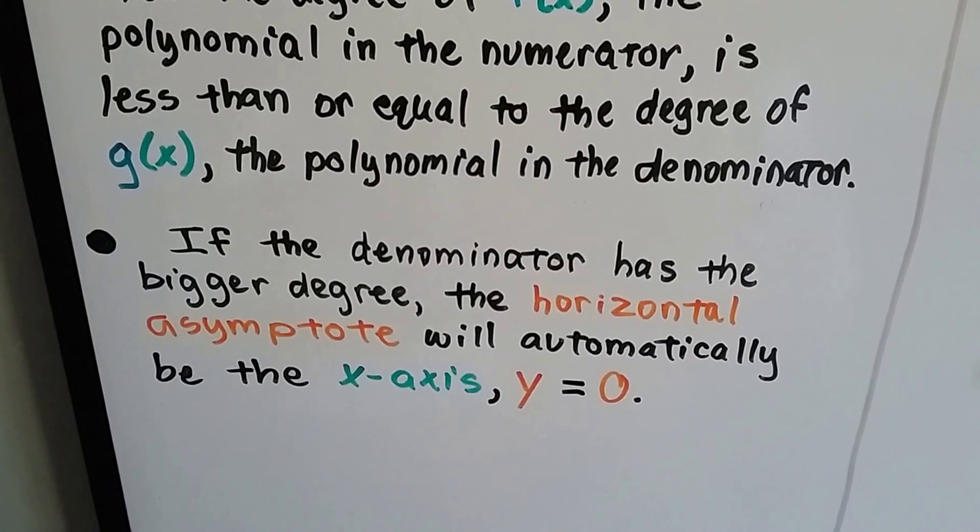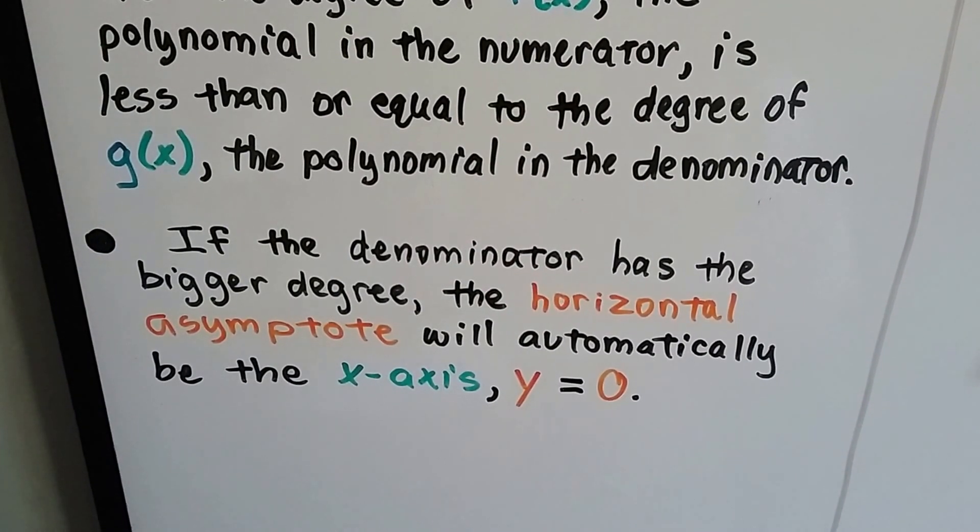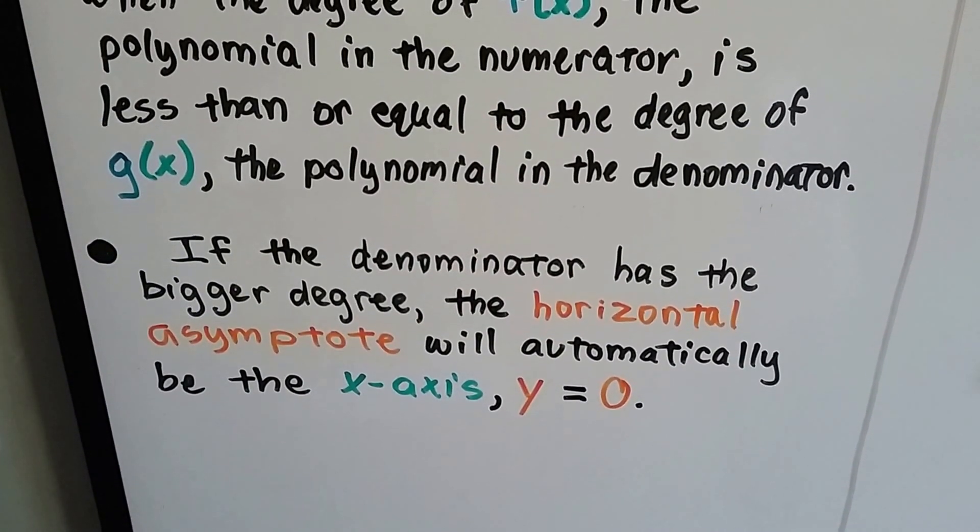If the denominator has a bigger degree, the horizontal asymptote will automatically be the x-axis, y equals zero.